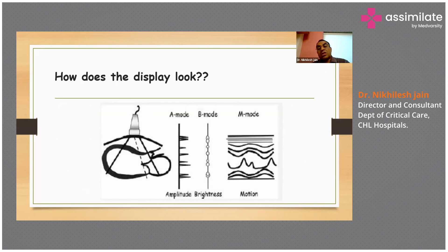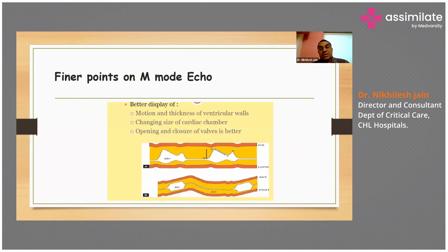This is how the display looks for M mode and B mode. In finer points on M mode echo, it gives you a better display of motion and a better display of thickness of the ventricular walls. It tells you more about the changing size of cardiac chambers and gives you more information about the opening and closure of valves.